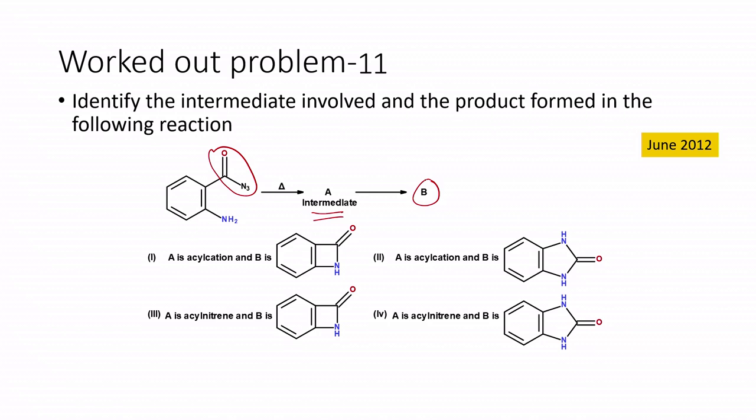These are all the reactions given here. What is the intermediate? Whether it is acyl cation or acyl nitrene, but the product is different. We have two acyl cations as intermediate or two acyl nitrenes as intermediate, and the final product B is quite different in both cases, either a four-membered one or a five-membered one. We are going to find out what is the exact product that will be formed in this reaction.